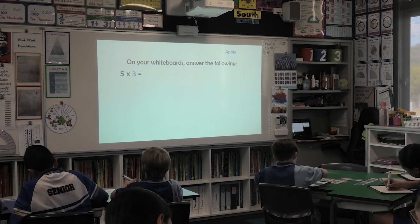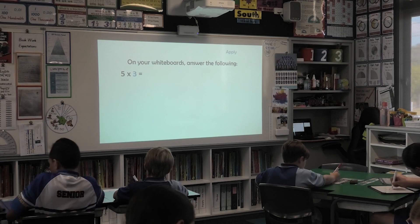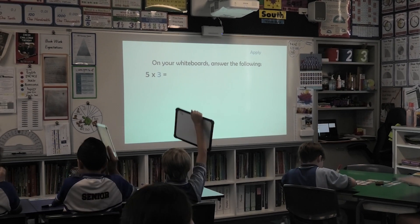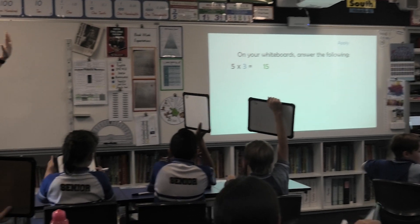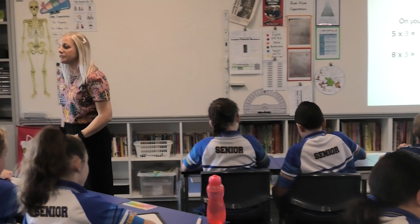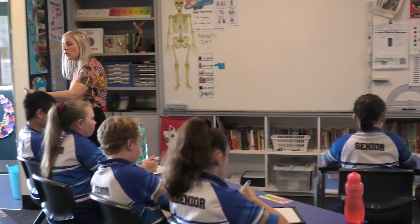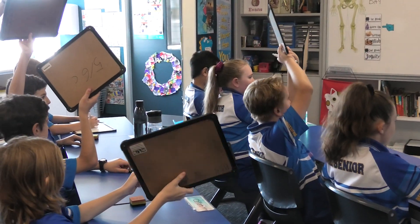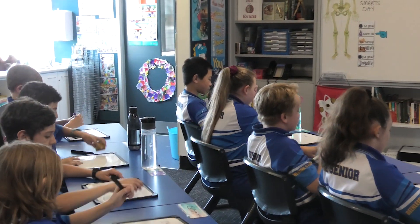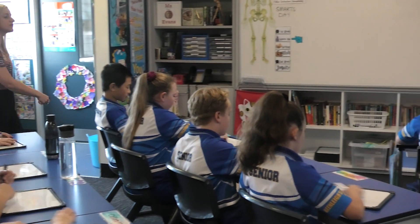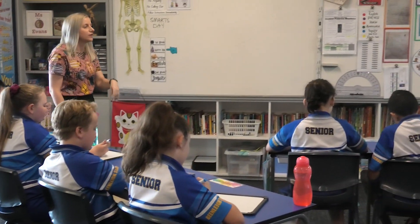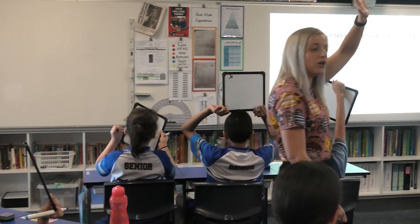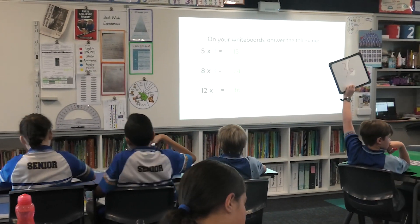What is 5 times 3? 5, 4, 3, 2, 1. Boards up. Short, sharp, bossy, go. 15. Excellent. 8 times 3. 5, 4, 3, 2, 1. Boards up. Short, sharp, bossy, go. 24. Excellent. 12 times 3. 5, 4, 3, 2, 1. Boards up. Short, sharp, bossy, go. 36. Excellent.